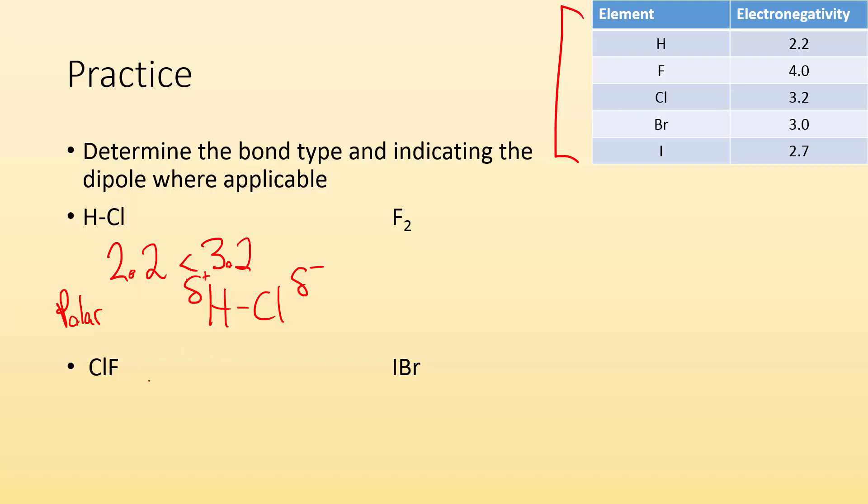Let me take a look at ClF. Cl is 3.2 and F is 4.0. They're not going to share those electrons evenly. Which one is going to be more electronegative? It's fluorine. It's going to have the partial negative charge, and chlorine is going to be the partial positive.